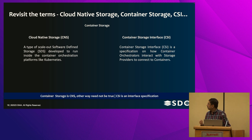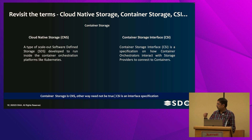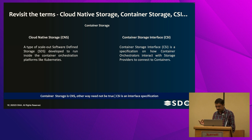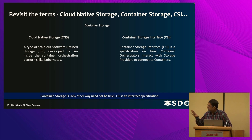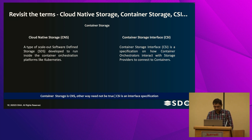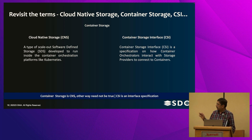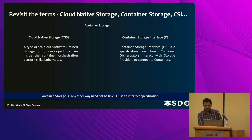CSI, which I mentioned a couple of times, is a specification for containers to interface with storage — and that storage could be of different kinds. CNS, on the other hand, is basically the storage system built using containers. We want to use cross-cloud or cross-cluster replication for CNS, and I have not seen any solutions, at least not in open source, which do this yet.